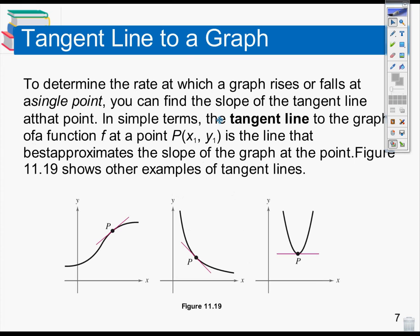So what we need to do is take a look at where the slope is and what the slope is at a particular point in time. I can always find what the slope is at a particular point. At one singular point there will be one singular slope. When that point moves somewhere else, the slope will change in turn. But there is a way for me to find a slope at a point, which is essentially the tangent line at that point.